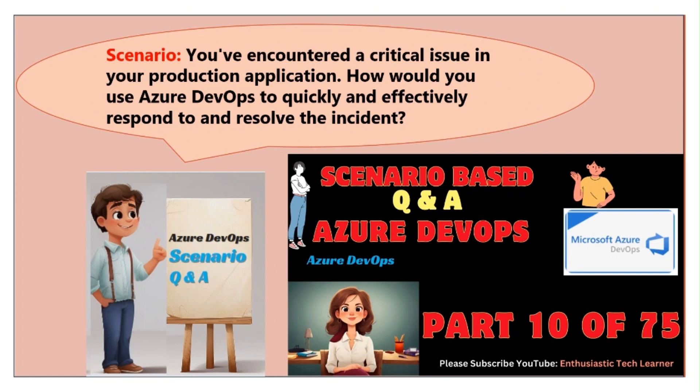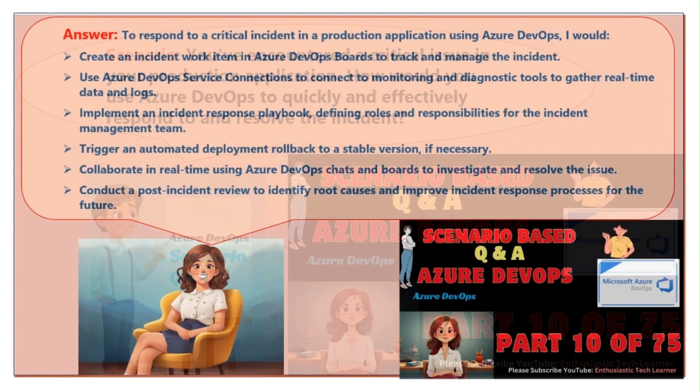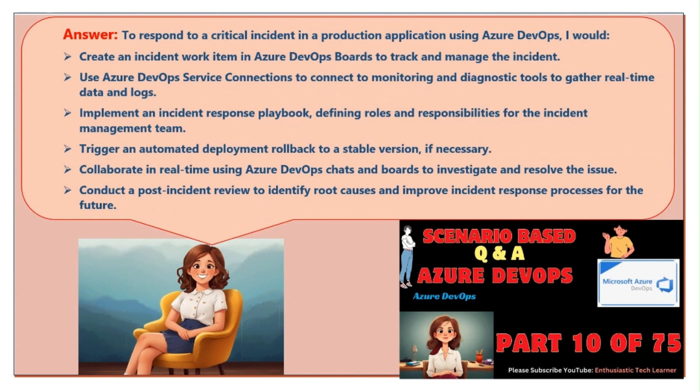Scenario ten: you've encountered a critical issue in your production application. How would you use Azure DevOps to quickly and effectively respond to and resolve the incident? To respond to a critical incident, I would create an incident work item in Azure DevOps boards to track and manage the incident. Use Azure DevOps service connections to connect to monitoring and diagnostic tools to gather real-time data and logs. Implement an incident response playbook, defining roles and responsibilities for the incident management team.